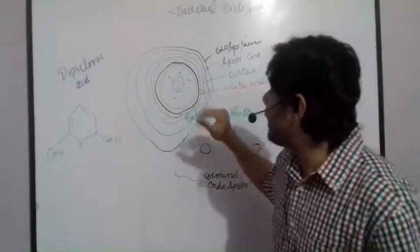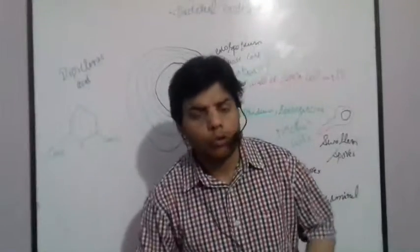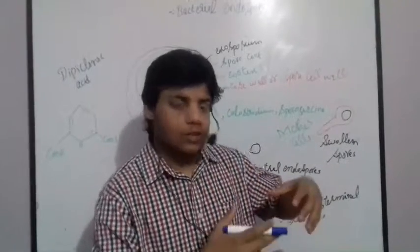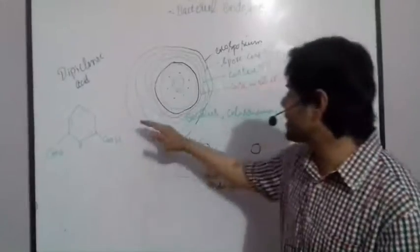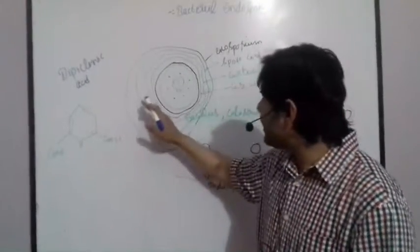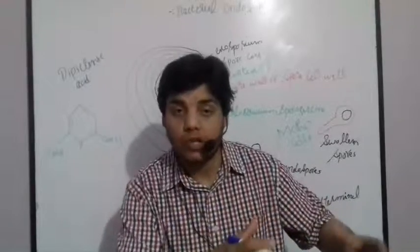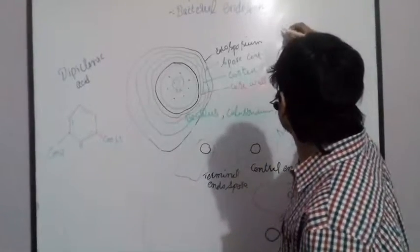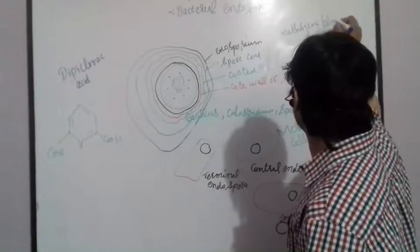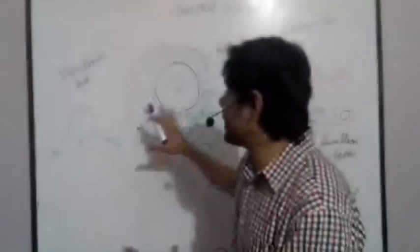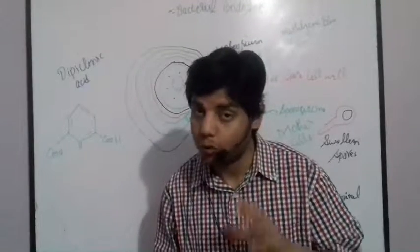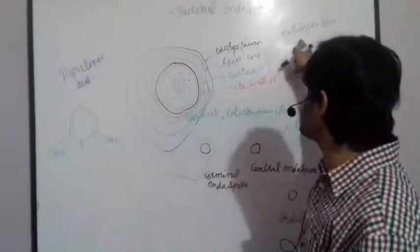Moreover, we can see endospores with the help of a light microscope and electron microscope as well. But for their visualization and structure study, we should stain this endospore with methylene blue stain or some other spore stains. Each layer is impermeable to some stains, so we use methylene blue stain to visualize the structure. Whenever you want to see it with a light microscope, you should stain it with methylene blue.